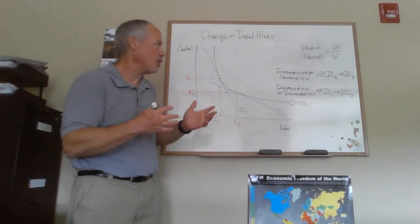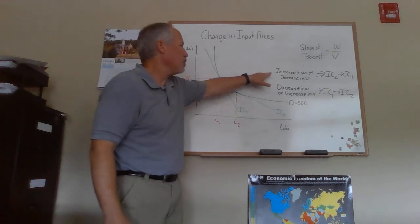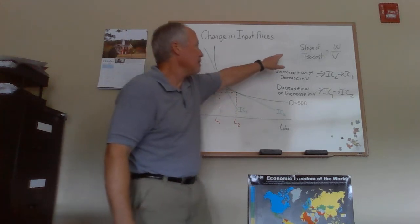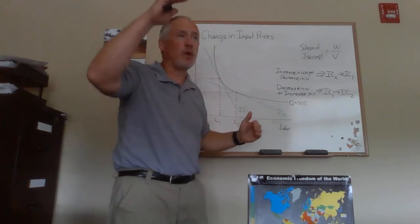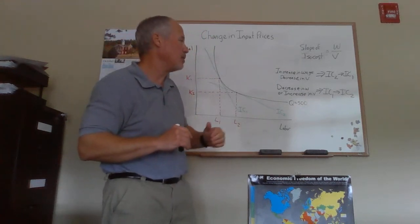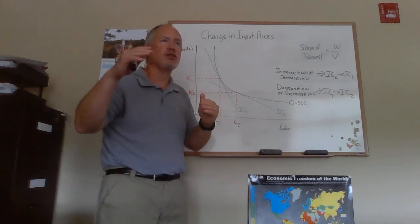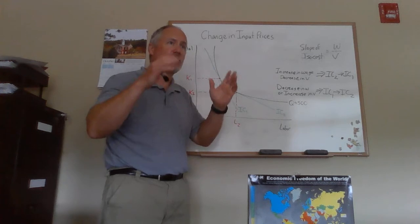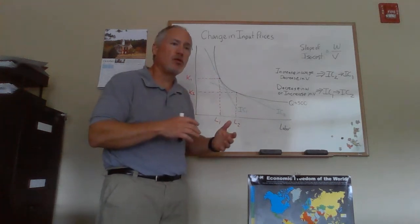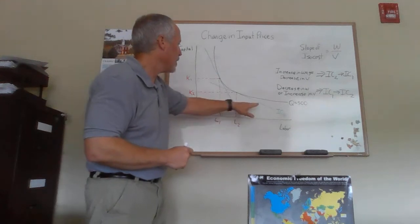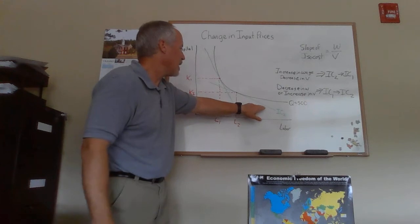So all we have to do is figure out which one's which. Well, if the wage goes up, the isocost is going to get steeper because the slope is wage over the price of capital. So with the wage in the numerator, an increase in the wage will make the isocost steeper. A decrease in the price of capital will also make the isocost steeper.